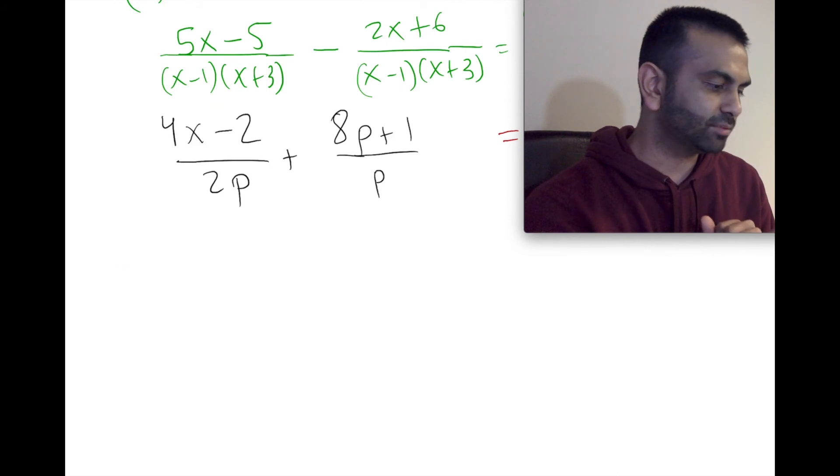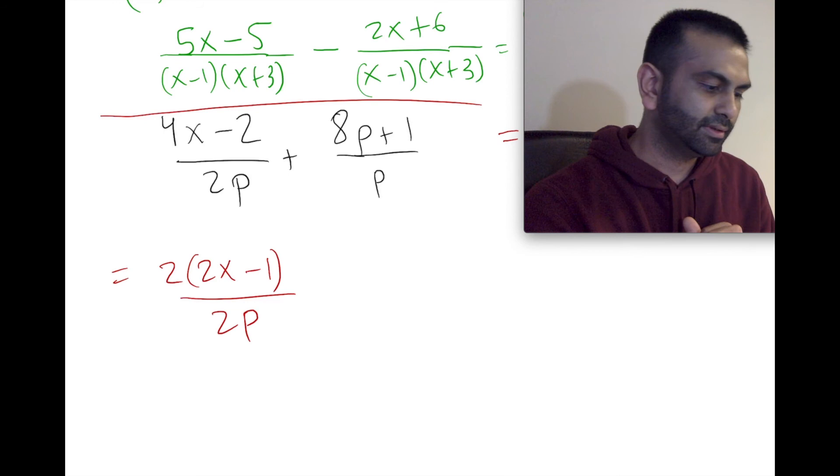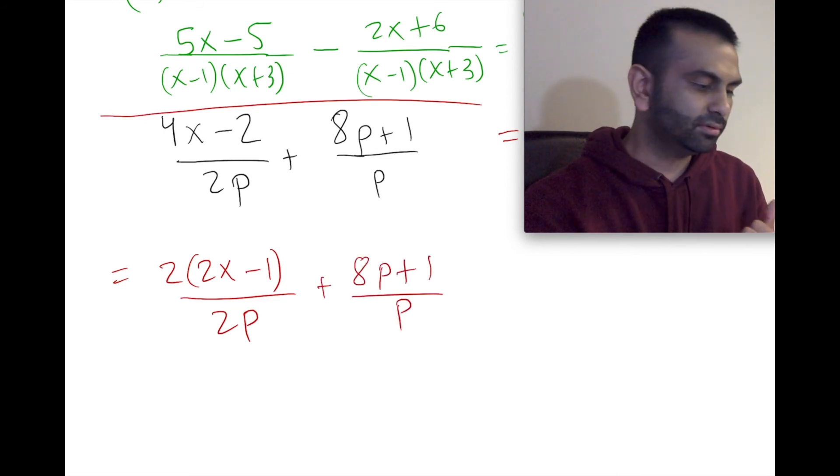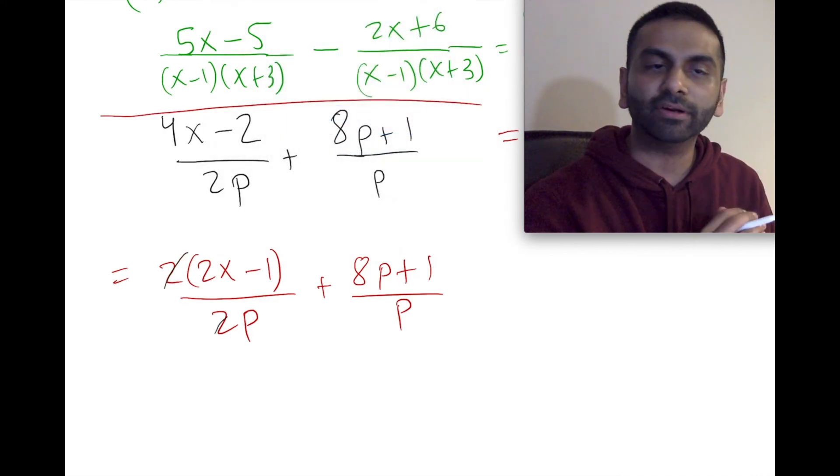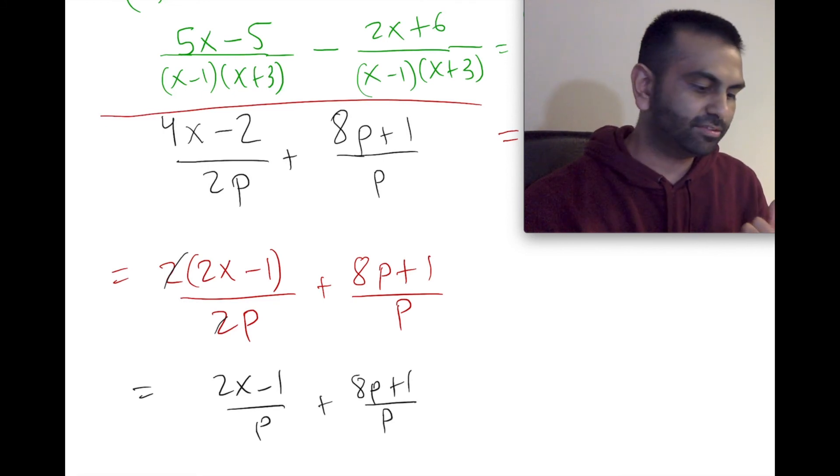The easier way to do this would be: looking at this numerator, if I factor out a 2, I'm left with 2x minus 1. So this is just 2(2x minus 1), and the denominator is 2p. Now the 2s can cancel because it's multiplied to the entire numerator and entire denominator. This fraction is really just (2x minus 1) over p plus (8p plus 1) over p, and now they have the same denominator, so adding them is easier.